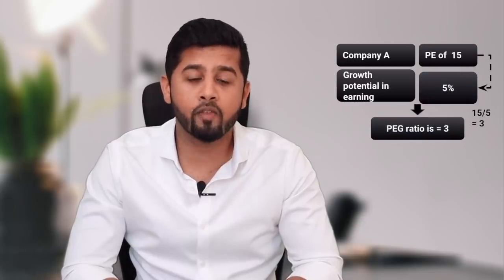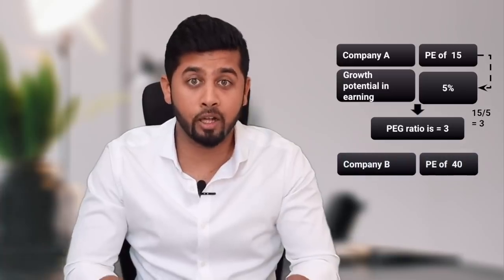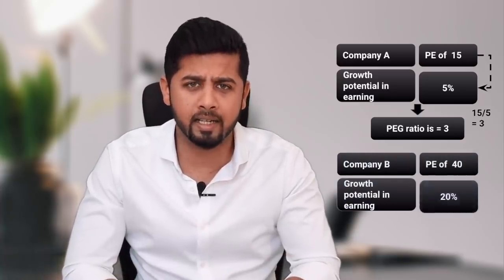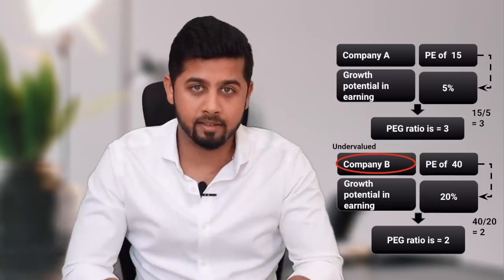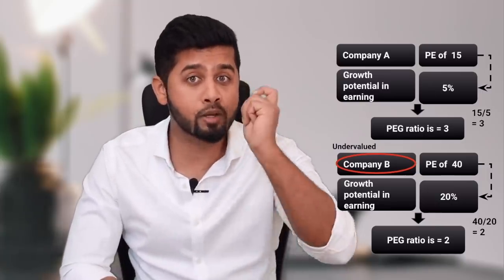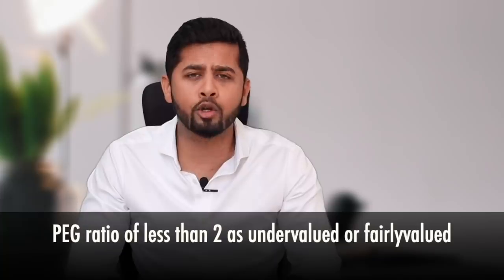The P/E-G ratio is calculated as P/E divided by its future earnings growth. If company A has a P/E of 15 but future growth potential in earnings is 5%, then the P/E-G ratio is 3. Whereas if company B has a P/E ratio of 40 but the future growth potential in earnings is 20%, then the P/E-G ratio is 2. In this case, company B is undervalued as compared to company A, even though the P/E of company B is on the higher side. Normally, a P/E-G ratio of less than 1 is ideal, but it is extremely difficult to find a great company with a P/E-G ratio of less than 1. So you can consider a P/E-G ratio of less than 2 as undervalued or fairly valued.